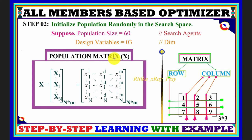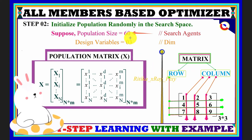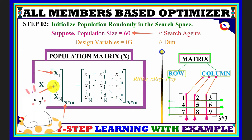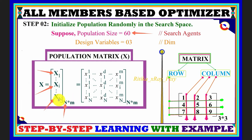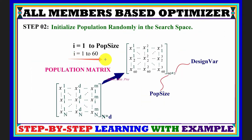We initialize the population for 60 agents in the search space. The population size N is 60, and we have positions for the first agent, second agent, up to the 60th agent. Each agent has 3 design variables — x1, x2, x3 — for the first member, second member, and up to the Nth member.